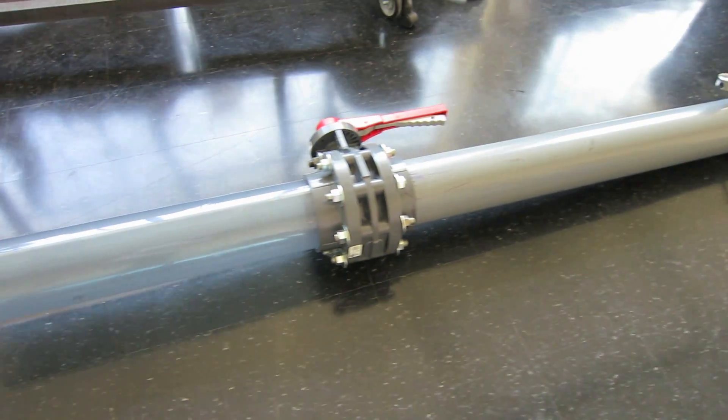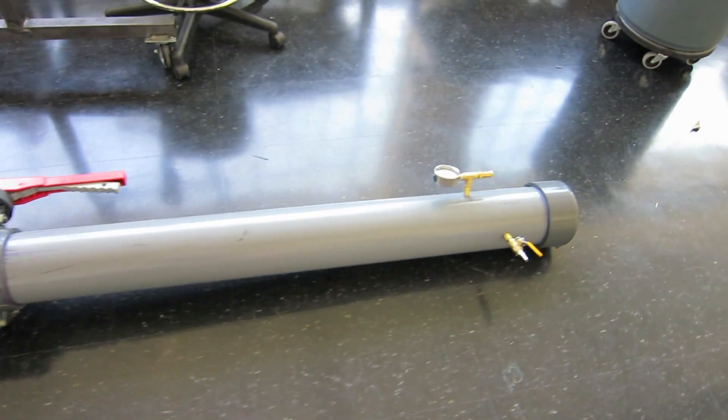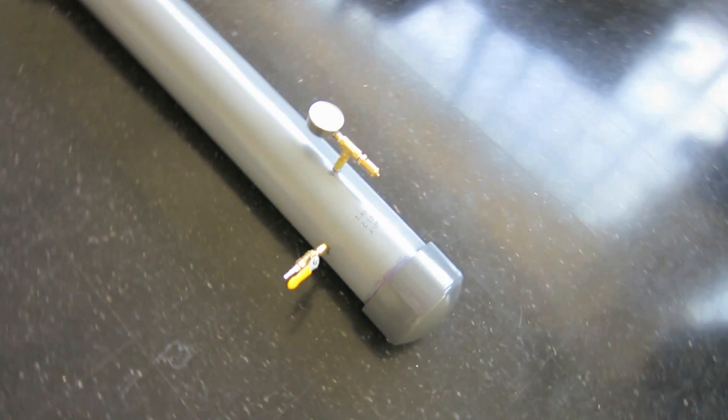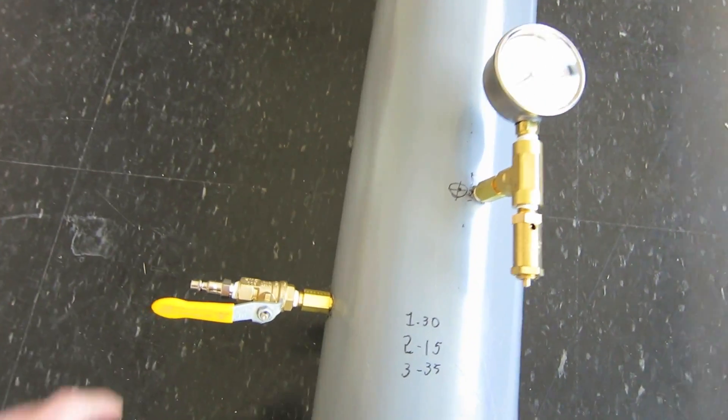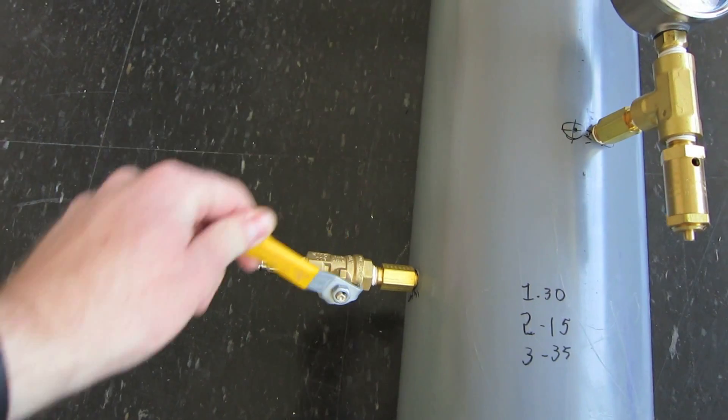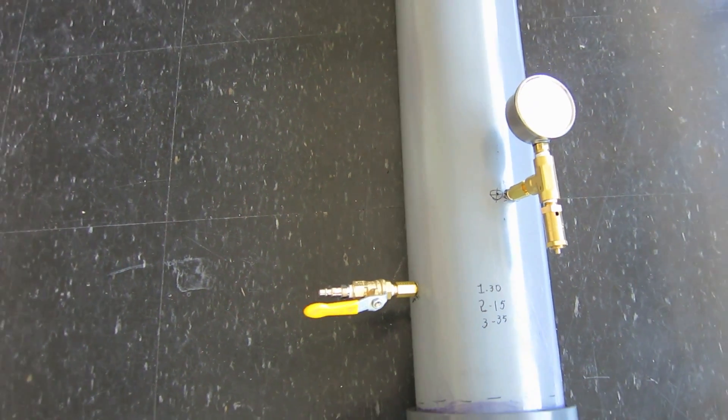This is the cannon that launches the sabo. And on the back side, here's the pressure regulator, and then here is the valve to open and close, to fill up the pressure chamber, which is in the back.